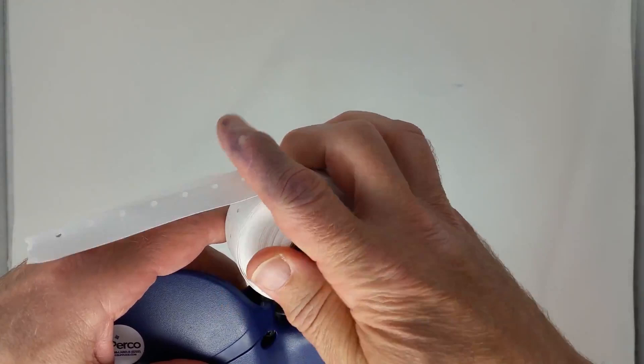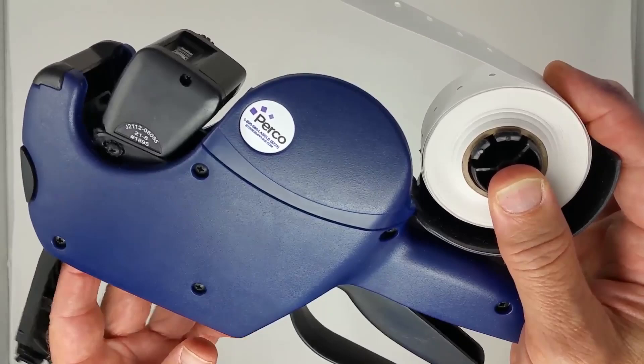Put the roll onto the spindle and bring the end into the center and feed it through the body of the gun. The labels will pass straight through.